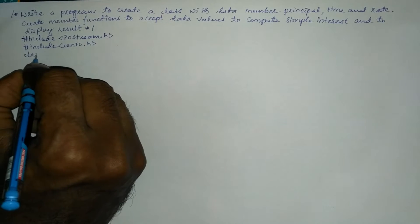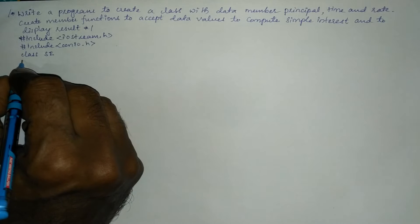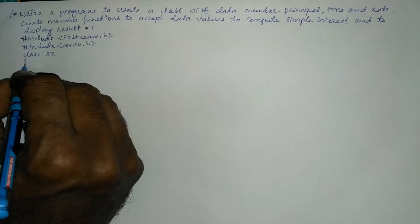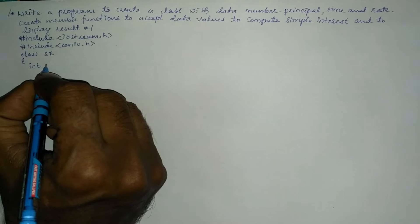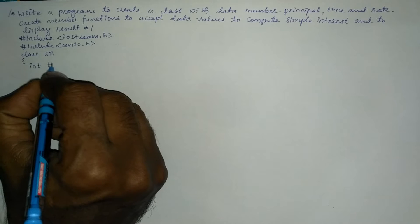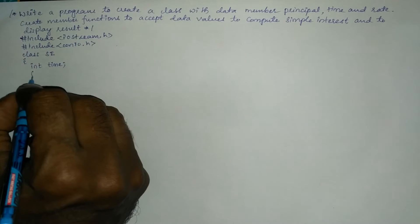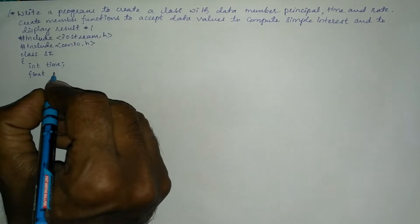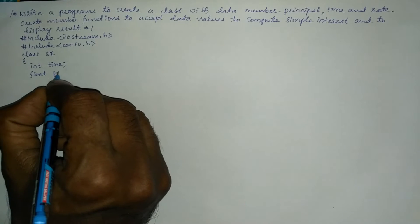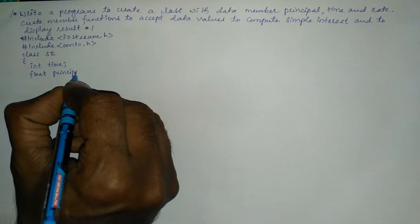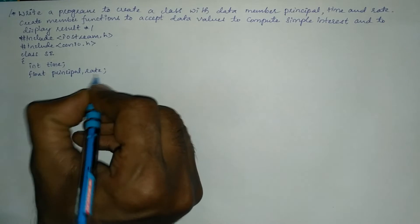Now I am going to define a class with the name SI, that is simple interest, with a curly open brace. Here I am going to declare a variable of type integer — that is time — and next, float type variables: principal and rate of interest.